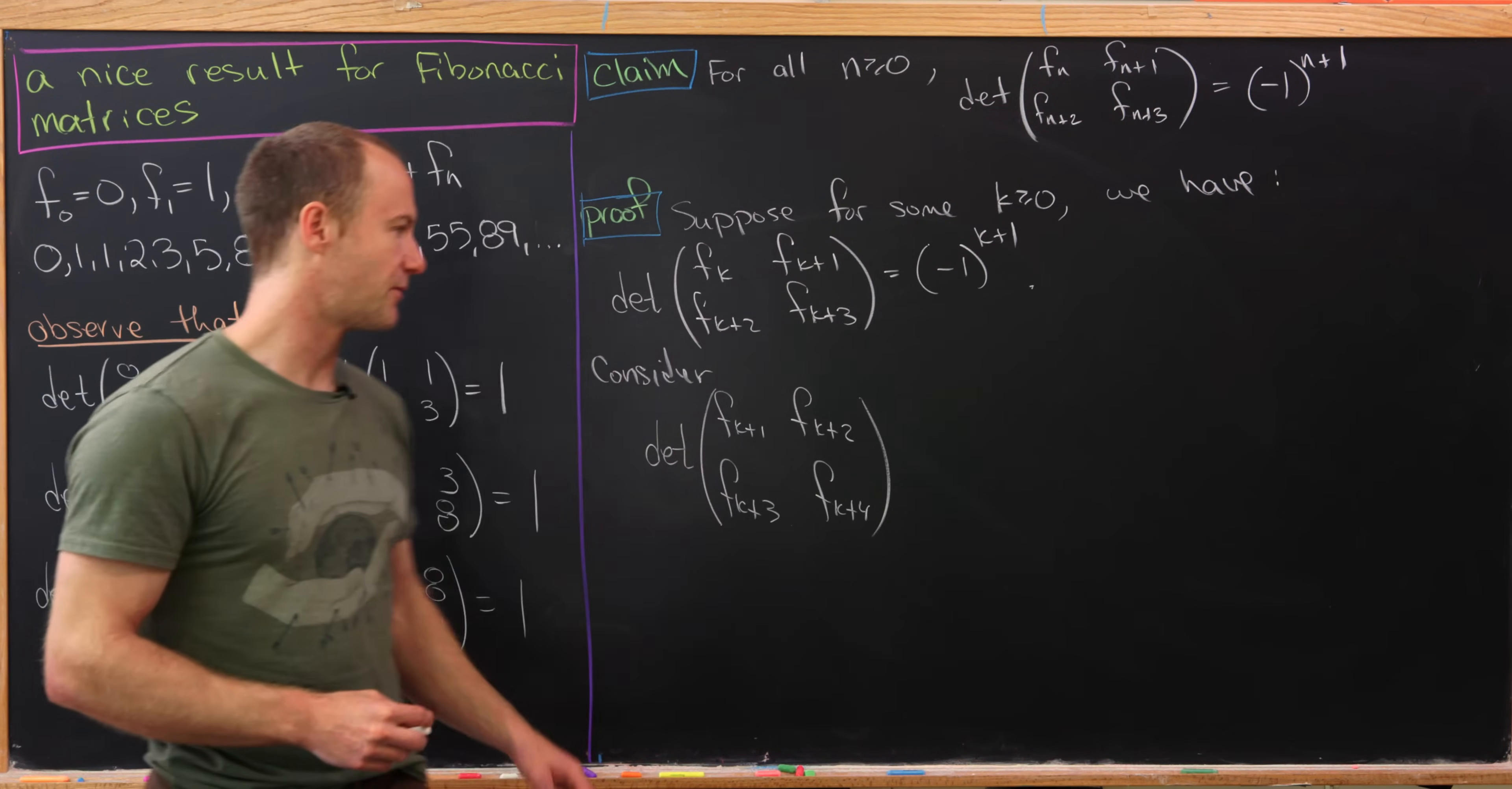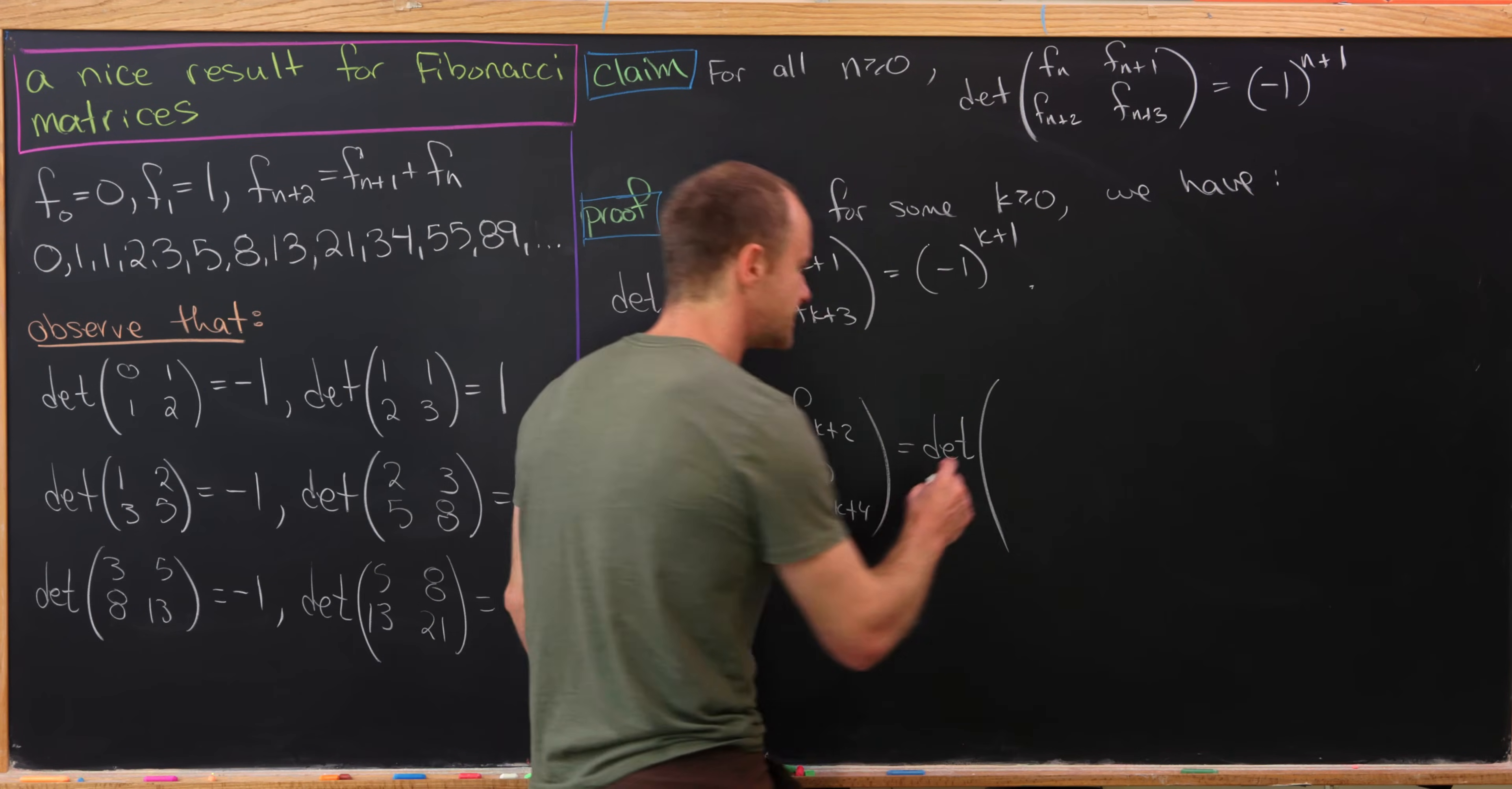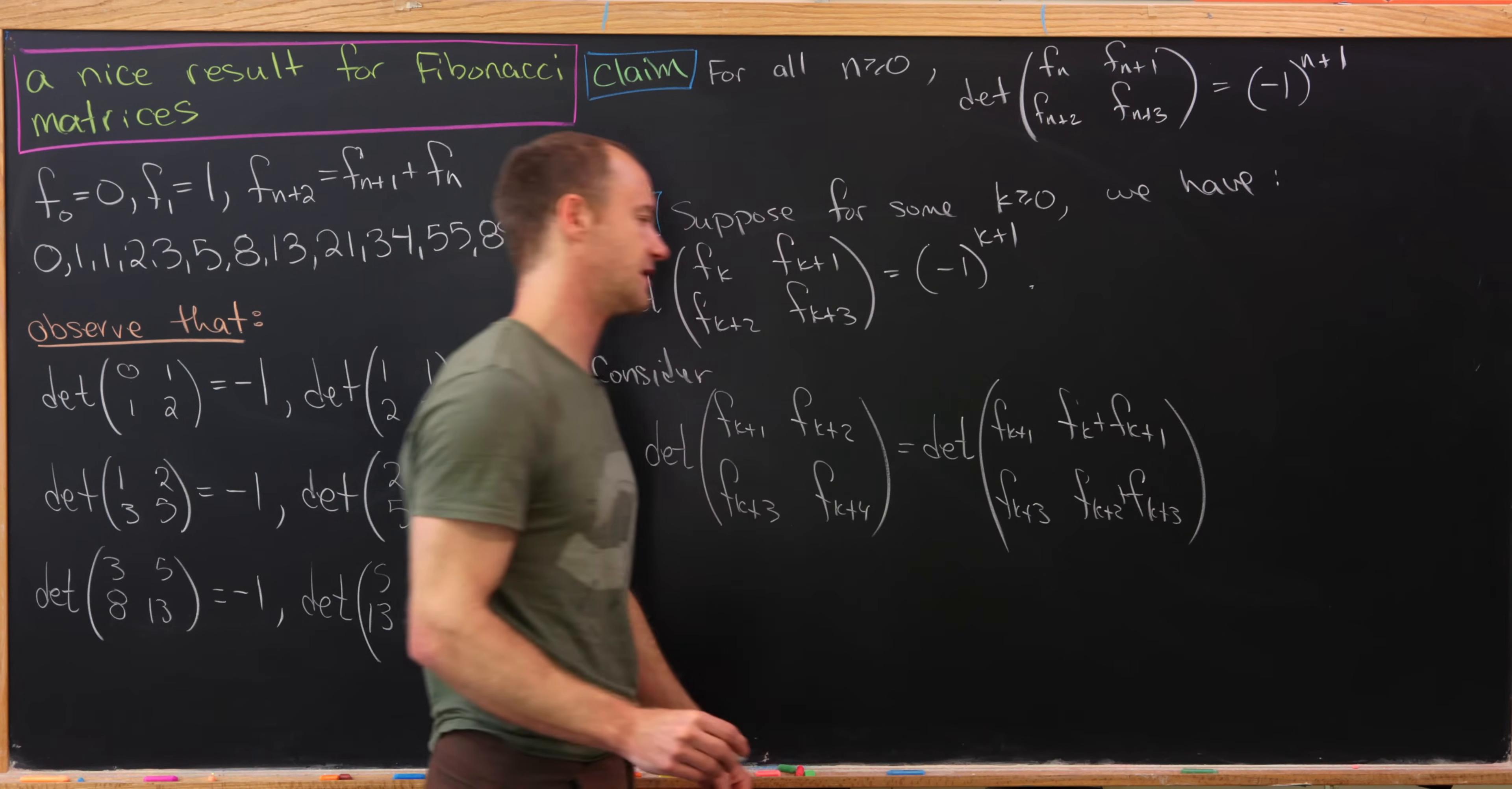And now we're going to apply the recursion to these elements that are in the second column. And that's kind of where this trick works. Obviously you could maybe just do this by straightforward calculation, but this trick will be useful because we'll extend it to prove something a little bit bigger later. Okay, so let's write this as fk+1. And then here we have fk plus fk+1 by the two-step recursion that defines the Fibonacci numbers. Here we have fk+3. Here we'll have fk+2 plus fk+3. Okay, nice.